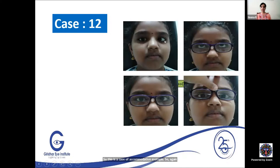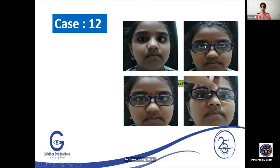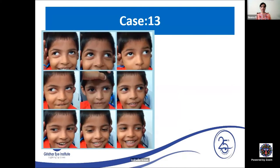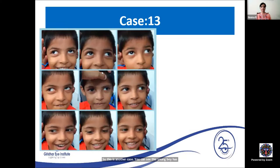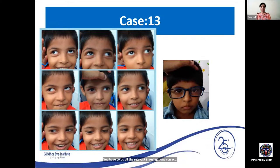A child with esotropia corrected for distance with spectacles but having significant residual esotropia for near with the same distance correction — indicating high AC/A ratio. Bifocals provided much better control of the near esotropia. Another case: a young boy with intermittent squint and classic V pattern with inferior oblique overaction. All relevant investigations, refractive error correction, and amblyopia treatment should be done. Surgical treatment — lateral rectus recession with oblique recession — gave good results.